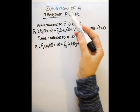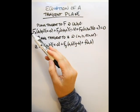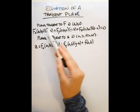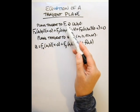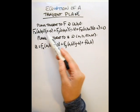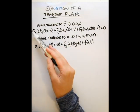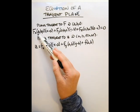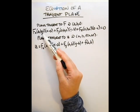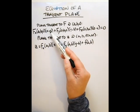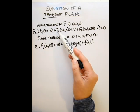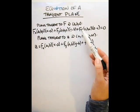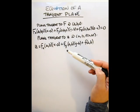The equation of our tangent plane for the implicit form of our surface: the plane tangent to our surface f at a point ABC is defined as follows. We have the partial derivative of f with respect to x evaluated at the point ABC times x minus a, which is the x value of our point. We do this for all three partial derivatives with respect to x, y, and z, and then it equals 0.